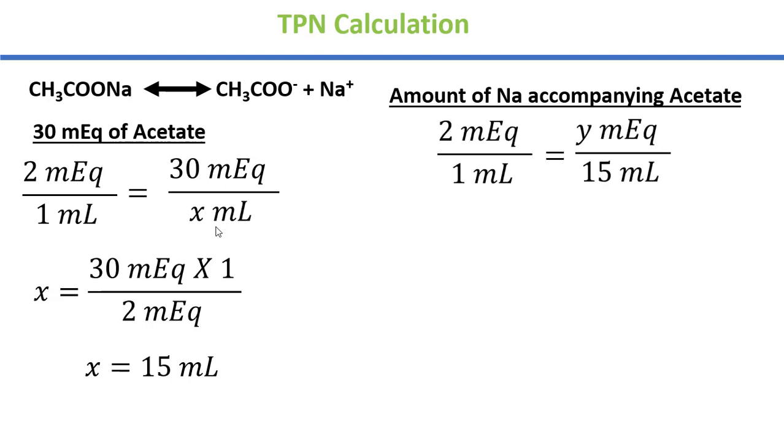Now we have 2 milliequivalents per mL. This is the solution for 15 mL. Now you can calculate the amount of sodium. Now cross multiply and you have the value of 2 multiplied by 15 divided by 1, that is 30 milliequivalents. So if you have 15 mL solution drawn, you will have 30 milliequivalents of sodium and you will have 30 milliequivalents of acetate.